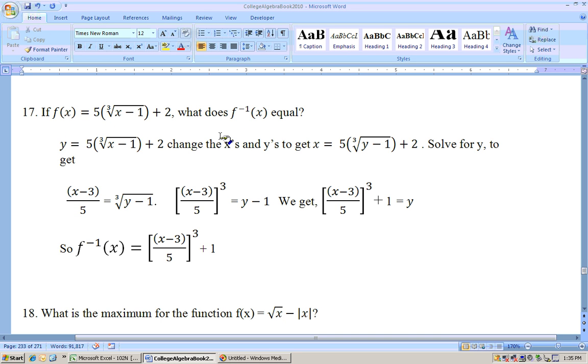Okay, problem 17 is a function we're supposed to get the inverse of. So first, write it with y = instead of f(x) =. Change all the x's to y's, and the y's to x's to get x = 5∛(y-1) + 2. Now, we need to solve this for y. First thing is subtract 2 and divide by 5.